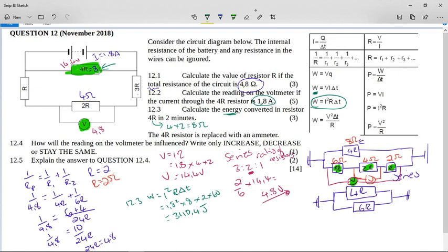So now they say to you, the 4R resistor is replaced with an ammeter. Now what do we know about ammeters? They always go in series and they always have a low resistance. How will the reading on the voltmeter be influenced? So what's going to happen? They're asking you about the voltmeter. Now the voltmeter is down here. It is in the bottom parallel part of the circuit. But let's have a look here at the circuit. Let's rub out some of the scribblings on the circuit so we can see what's going on.